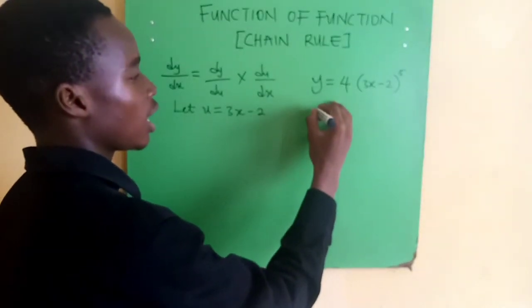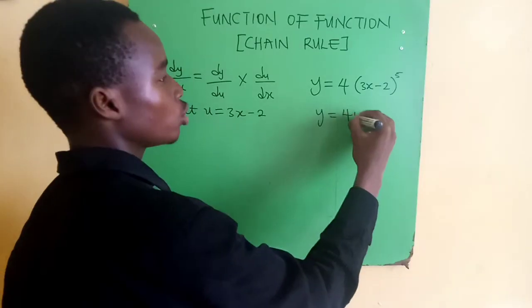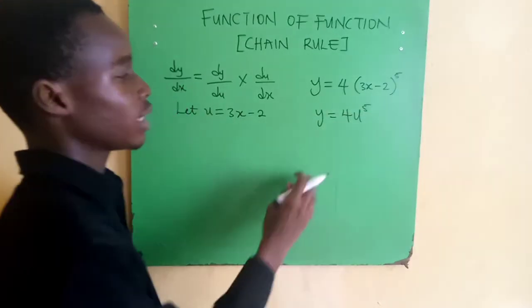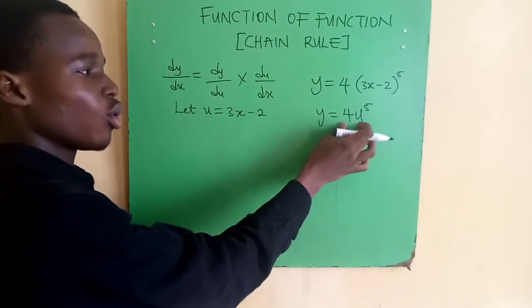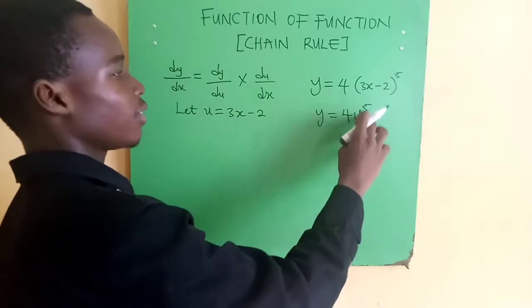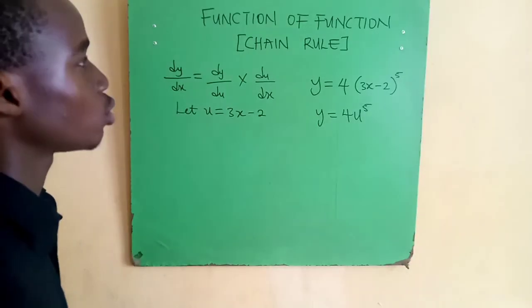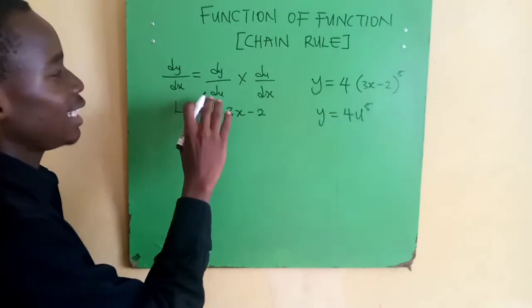Now you can see y is a function of a function - it's a function of 4u^5 and a function of this. That's why it's called function of function rule or chain rule. Now we have to find dy/du and du/dx, meaning we're going to differentiate both.